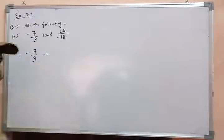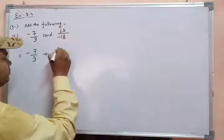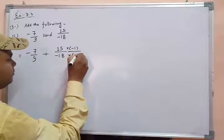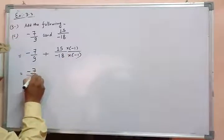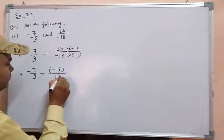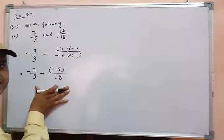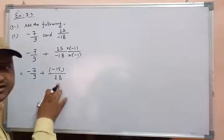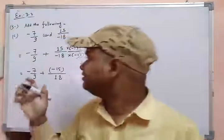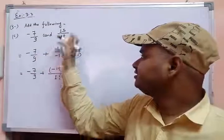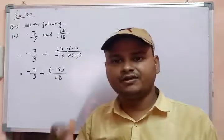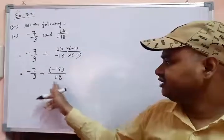You have to write the operator plus, and since this number is not a standard rational number, you multiply by minus 1. So minus 7 upon negative 9 becomes 7 upon 9, and we get minus 15 upon positive denominator. Now this is the standard rational number because there are no negative signs in the denominator. So first convert to standard form, then proceed to add.